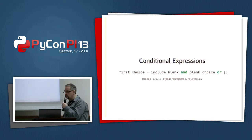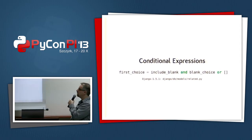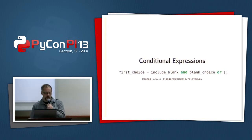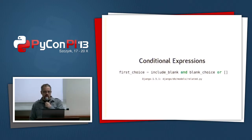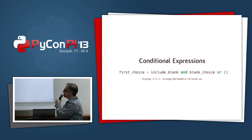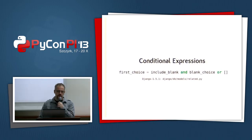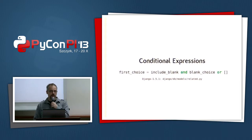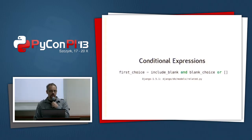Next: conditional expressions. You might have seen this — it looks like a logic expression because it has ands and ors, but it isn't. It's a sneaky conditional. It means: if include_blank is true, first_choice gets set to blank_choice; otherwise it's an empty list. But there's a big problem: if blank_choice is passed in as something that evaluates to false — like None, an empty set, or an empty string — first_choice will always be an empty list.